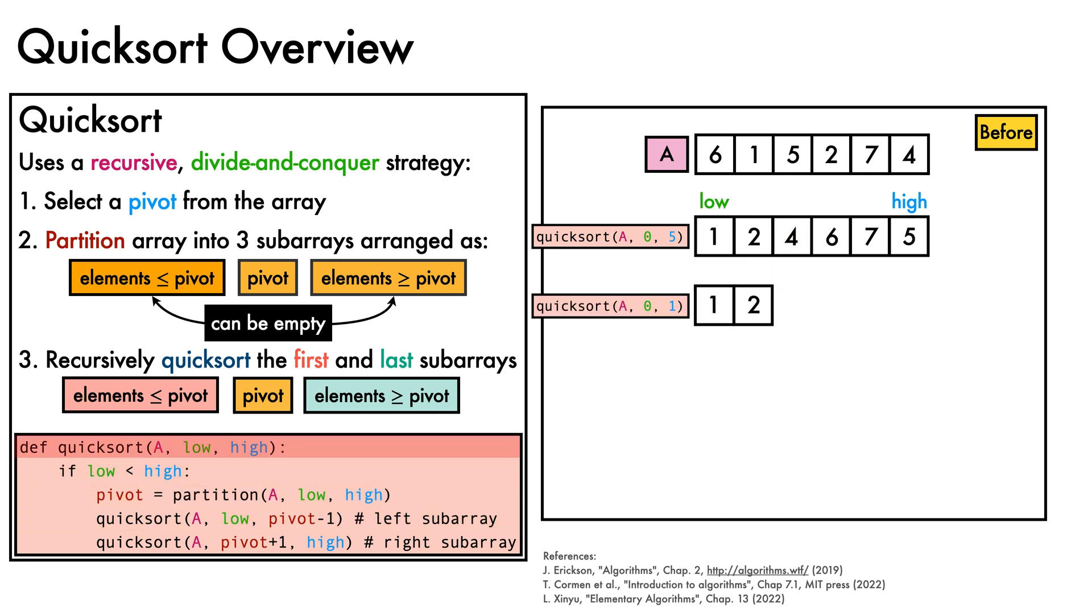Next, we call Quicksort on the subarray to the left of the pivot, with the same low index, but a high index of pivot minus 1. Here, we've duplicated the cells to show the recursion, but no copying is needed. Since low is still less than high, we call partition, which again selects the pivot as the last element in the subarray and performs step 2, which involves no rearrangements.